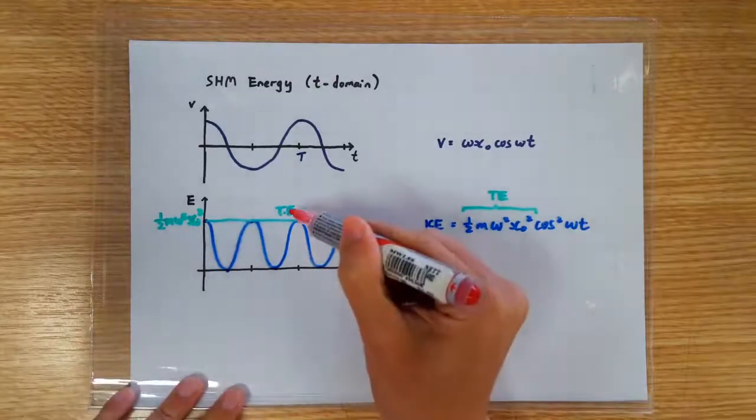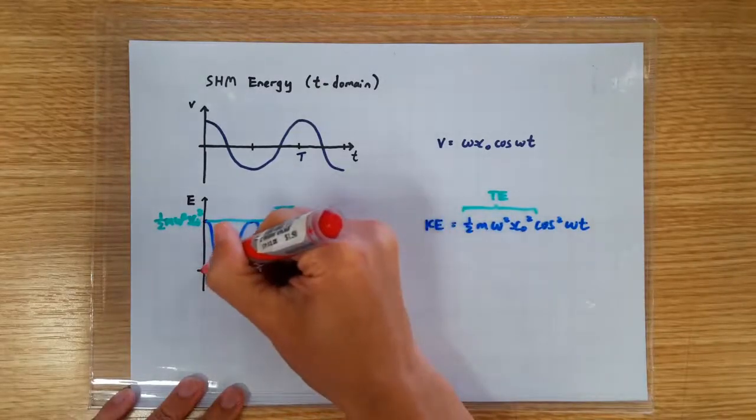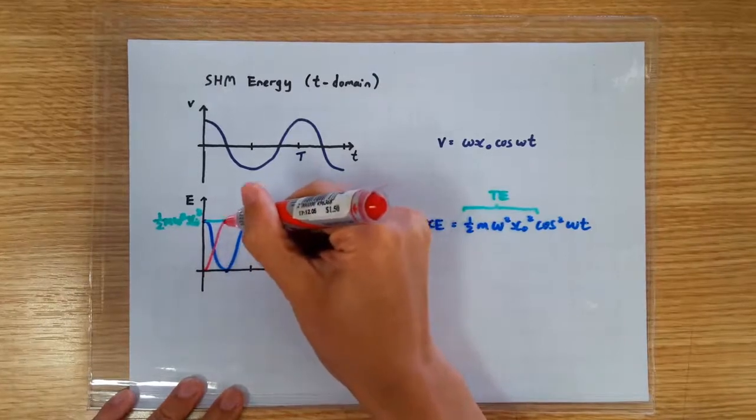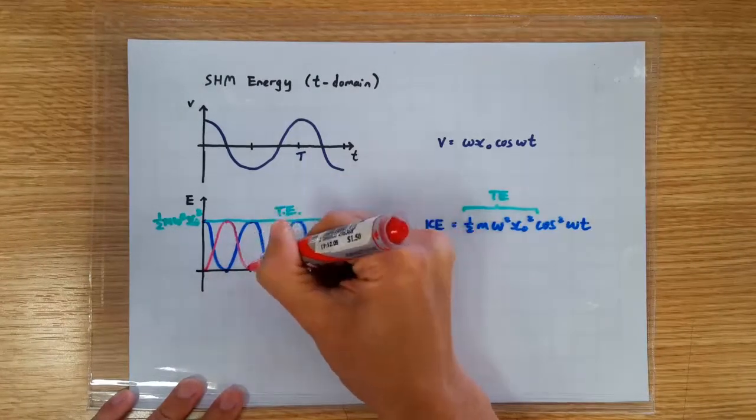So the difference between total energy and kinetic energy has got to be the potential energy. That's where the energy is temporarily stored.